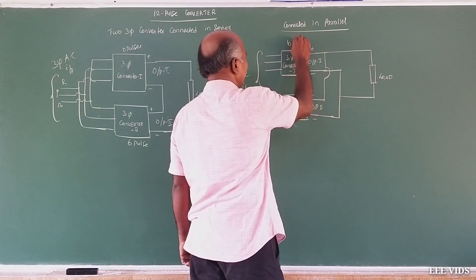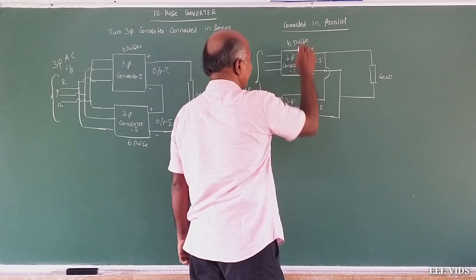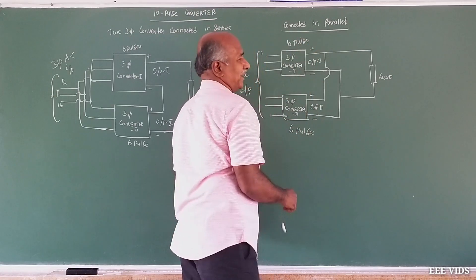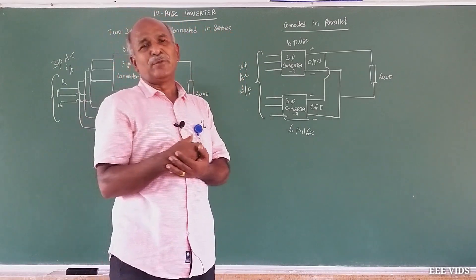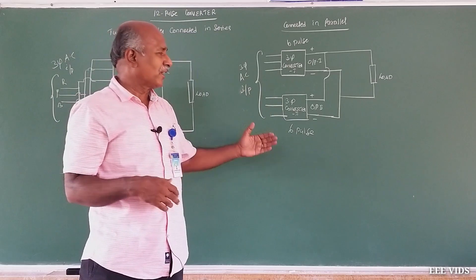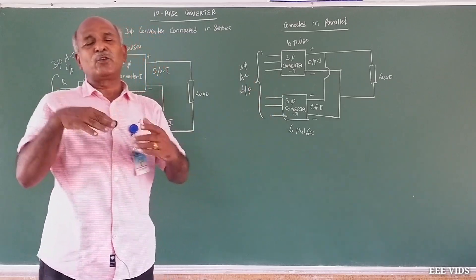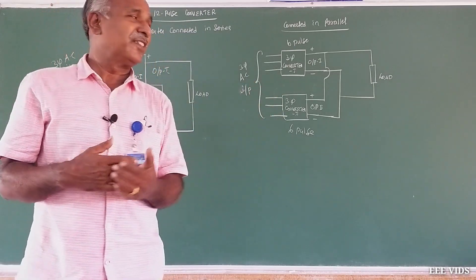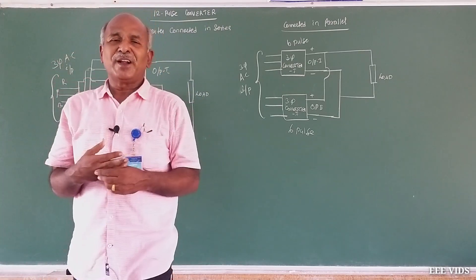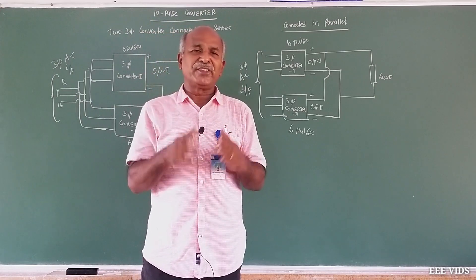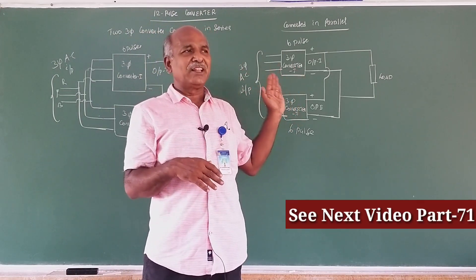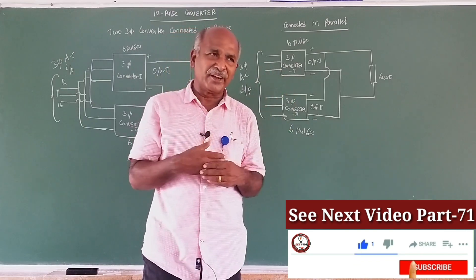Total here is 6 pulses plus 6 pulses. We will simulate this to understand how 12 pulses are produced — using MATLAB simulation with bridge converters and firing sequences. This is the 12-Pulse Converter. Remaining topics will be covered in the next class, where we will study AC voltage converters — converting AC to DC.